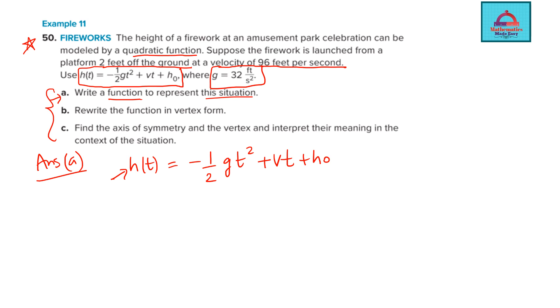Now, out of these, what all are given? Let's write. So I'm given the value of g. So I will use, I will substitute g as 32 feet over second square. This is the unit.